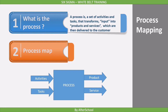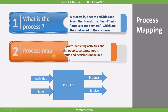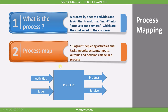Products and services are then delivered to the customer. That means the process has activities and tasks within it. To represent these activities and tasks, we use a process map. A process map is a diagram depicting activities and tasks, people, systems, inputs, outputs, and decisions made in a process.